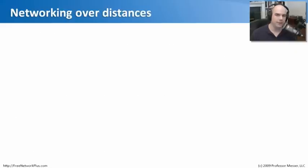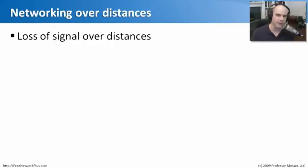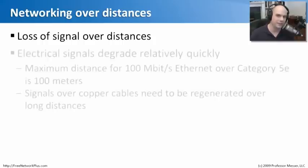If we have a network in our home office or facility within a building, we don't have to worry so much about sending the signal over a long distance. But as soon as you go outside the building or need to transmit information down the street, across the city, or to a different country, you get into concerns relating to networking over long distances. A major thing to think about is signal loss — as copper sends electrical signals, the signal will have interference and degrade over time. It's the same thing with light: light will degrade over distance as well.